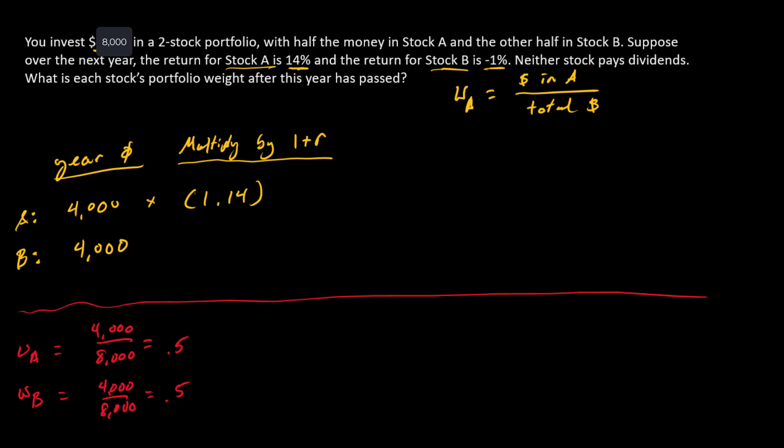For stock B, since r is -1%, 1 plus r is 1 minus 0.01, or 0.99, so we're going to multiply there.